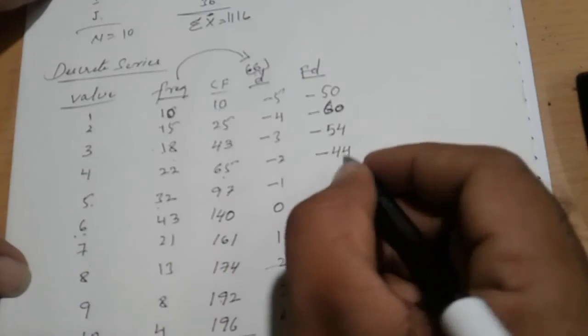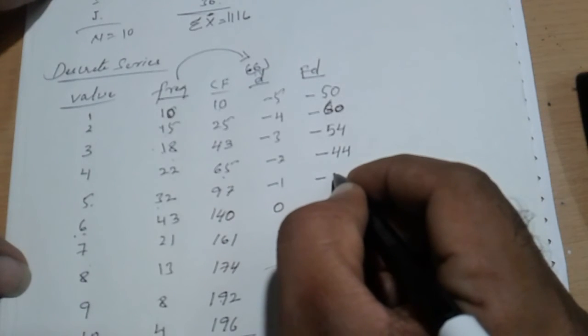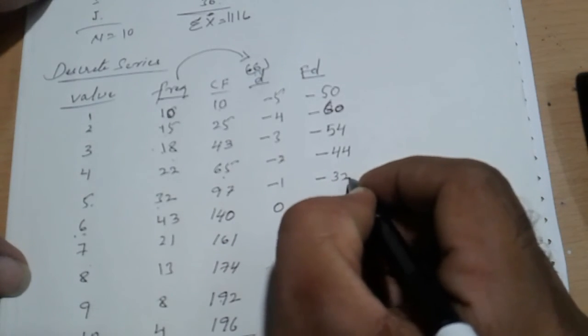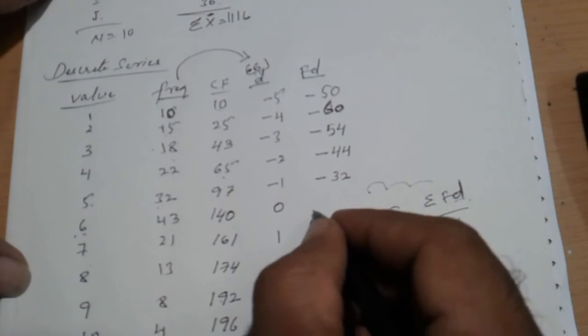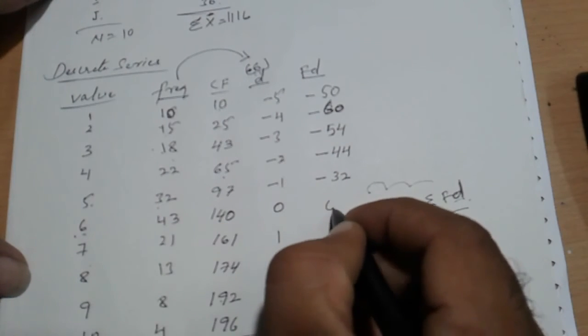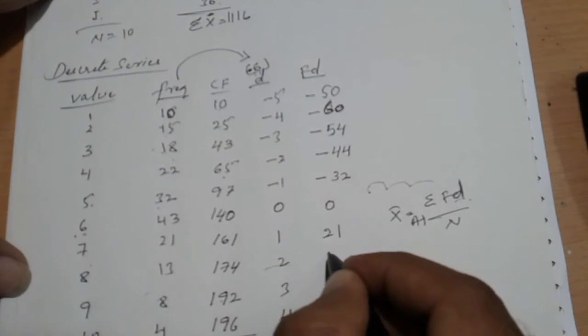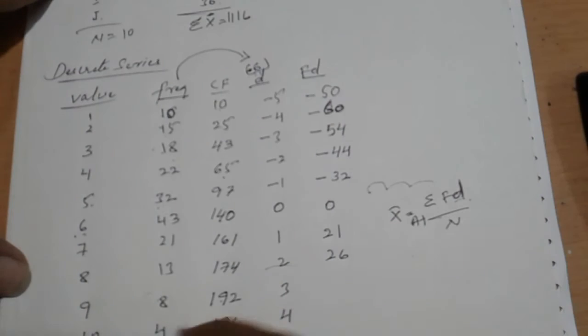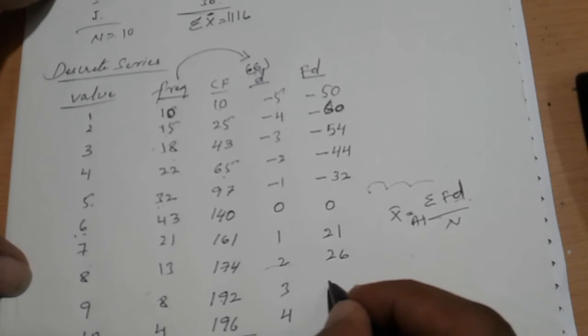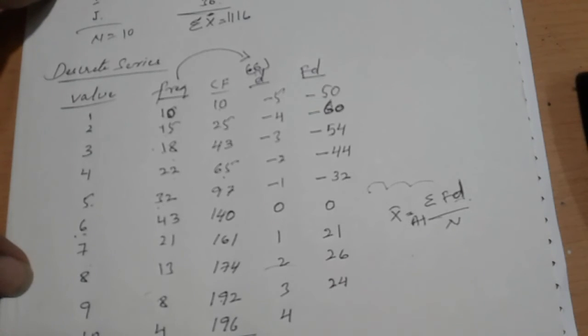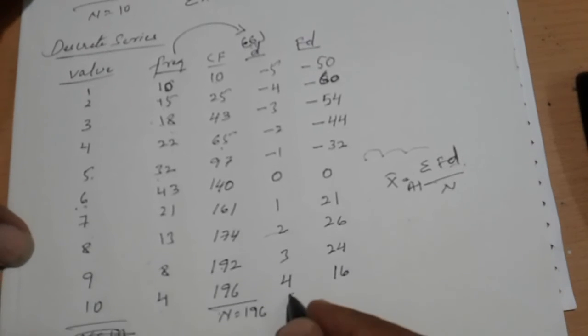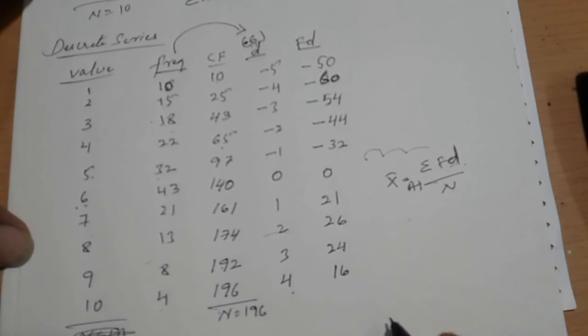32 into minus 1: minus 32. 43 into 0: 0. 21 into 1: 21. 13 into 2: 26. 8 into 3: 24. 4 into 4: 16. This 4 and this 4 - 4 fours are 16.